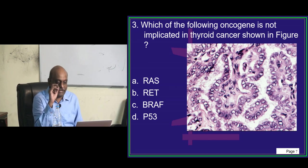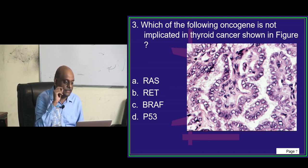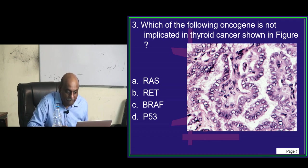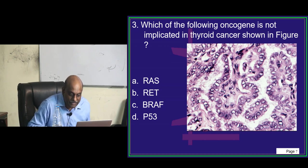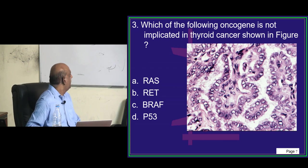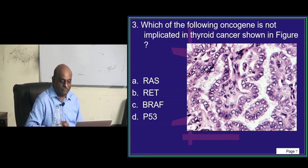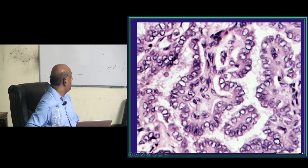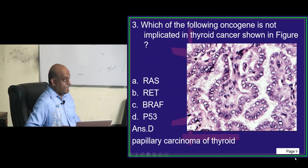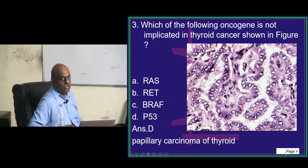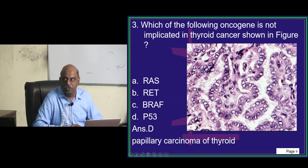This is the quiz link — every day the quiz has a link you can share with your friends. Ritu is proposing RAS and Asbaan Sheikh is proposing BRAF. The answer is p53 — however, RAS, RET, and BRAF are all present in papillary carcinoma of the thyroid.